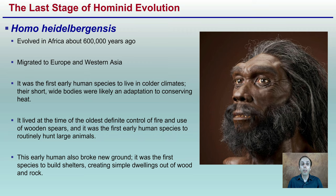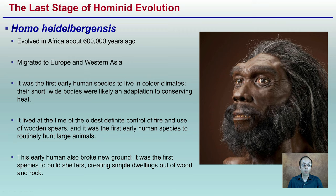Homo heidelbergensis had a reduced surface area-to-volume ratio and lived in the oldest times that defined control of fire and use of wooden spears. It was also the first early human species to routinely hunt large animals. Additionally, this early human was the first species to build shelters, creating simple dwellings out of wood and rocks — the first to establish a house or living structure.